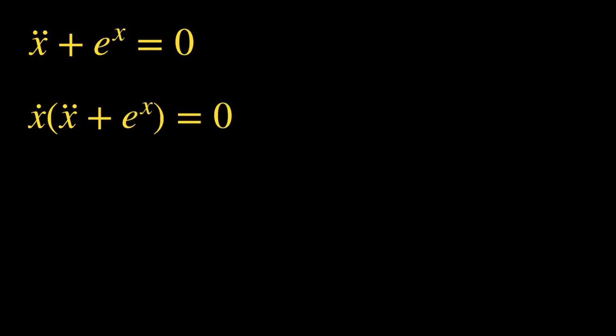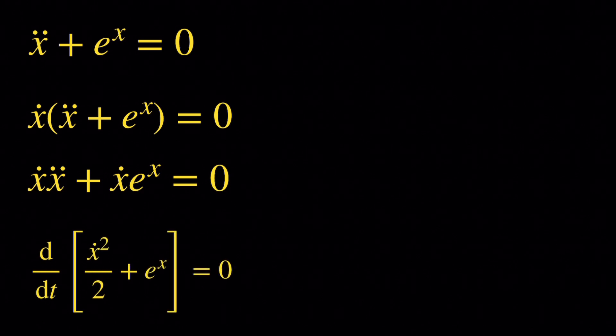In order to solve it, we're going to multiply both sides of the equation by an integrating factor. An integrating factor is basically a factor that will make the right-hand side of the equation into the derivative of a certain function. So if we multiply both sides by x-dot, we get x-dot times x-double-dot plus x-dot times e to the x. The left-hand side here is actually the derivative of x-dot squared over 2 plus e to the x.